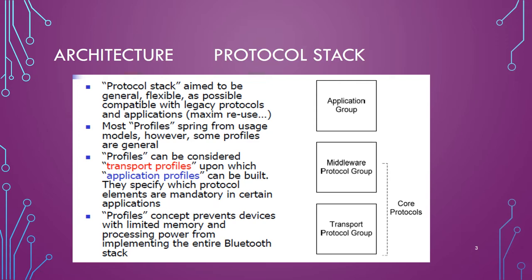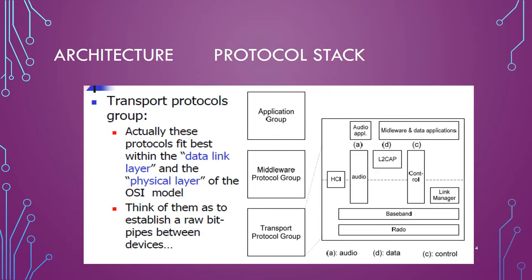The profiles concept prevents devices with limited memory and processing power from implementing the entire Bluetooth stack. Looking at the transport protocol group structure, from audio application there may be a sort of control, and then there is data. Layer-wise, you can see in the diagram: the radio layer, the baseband layer, and in between there is HCI, audio, L2CAP, control, and link management. Audio applications and middleware data applications are processed via the particular protocol. These protocols fit best within the data link layer and physical link of the OSI model, establishing raw bit pipes between devices.